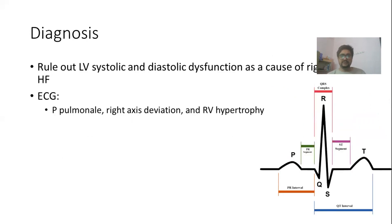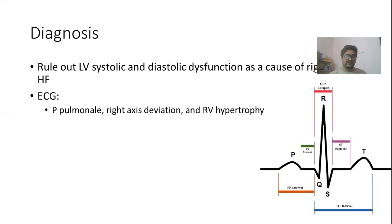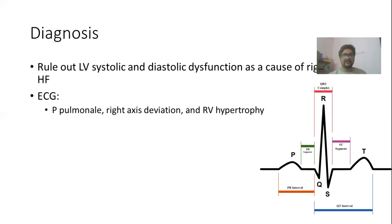Diagnosis is made after excluding causes of left heart failure. If there is evidence of left heart failure, we cannot diagnose those patients as having cor pulmonale. We need to rule out right ventricular systolic and diastolic dysfunction before making the diagnosis. When the left ventricle is working properly and there are features of right heart failure, we consider cor pulmonale. For diagnosis, ECG can be useful, showing P pulmonale, right axis deviation, or RV hypertrophy; however, these ECG changes are not specific for the diagnosis of cor pulmonale.